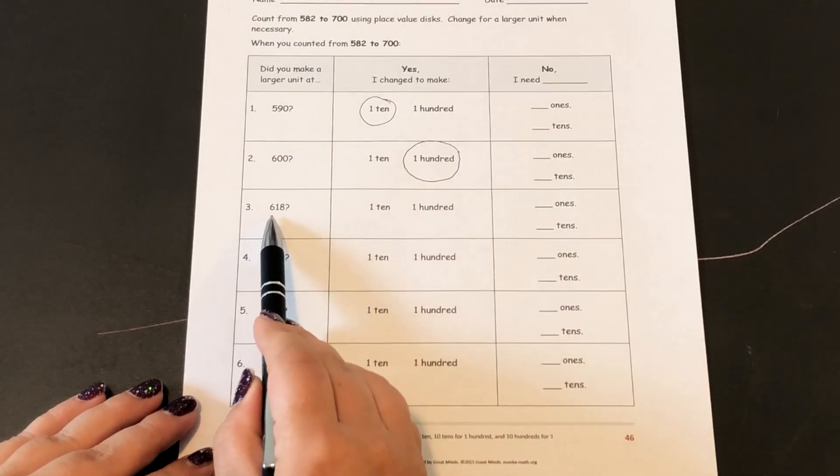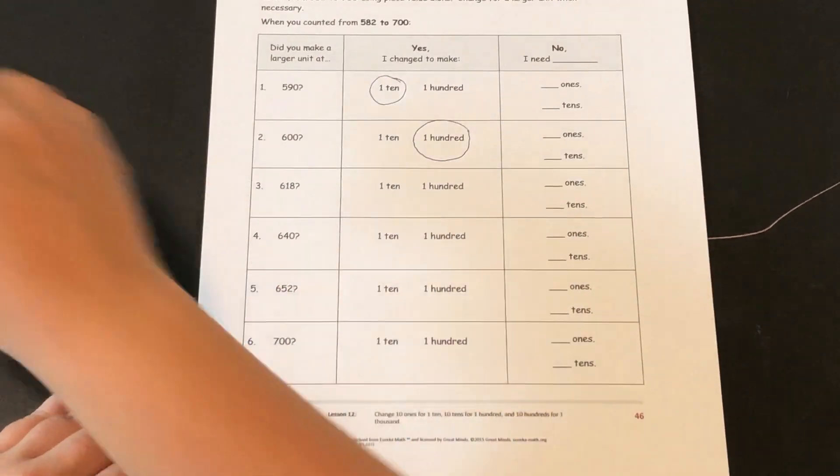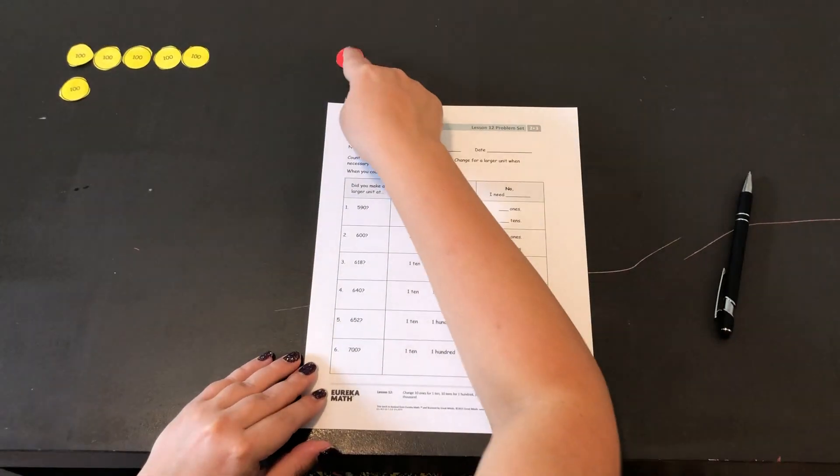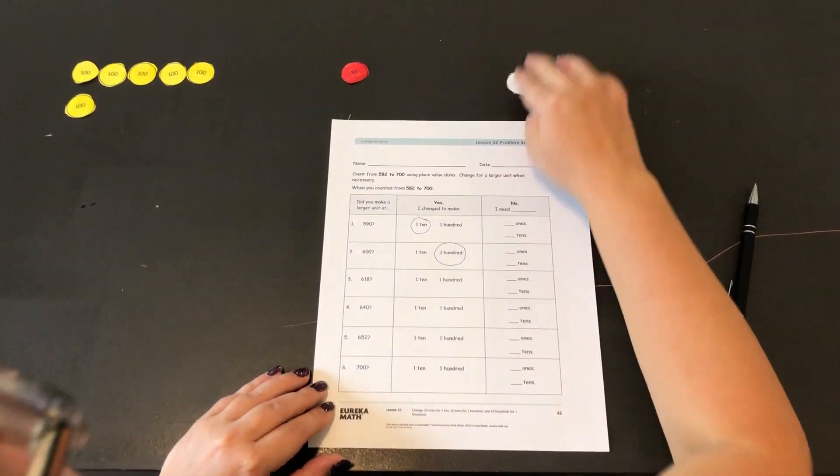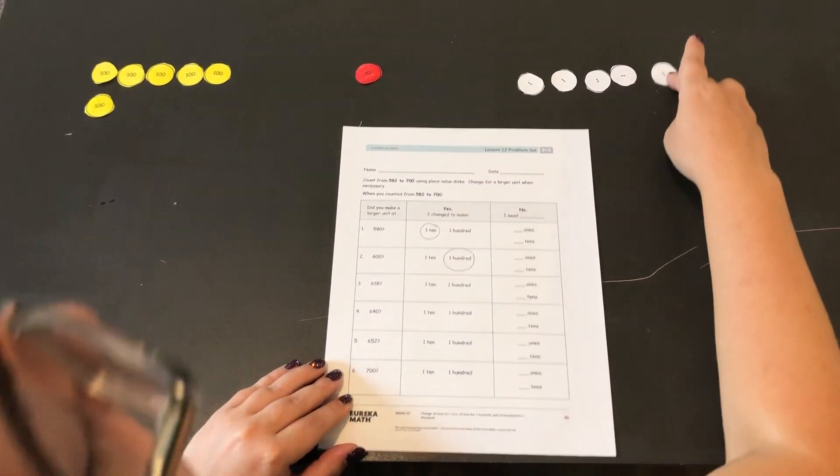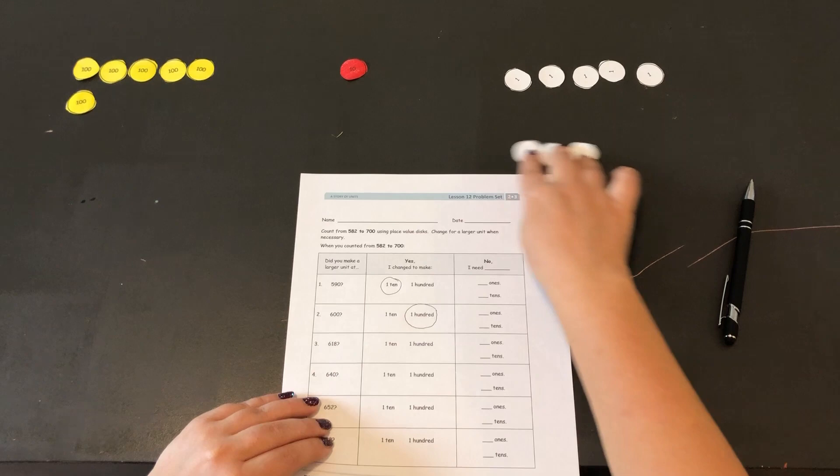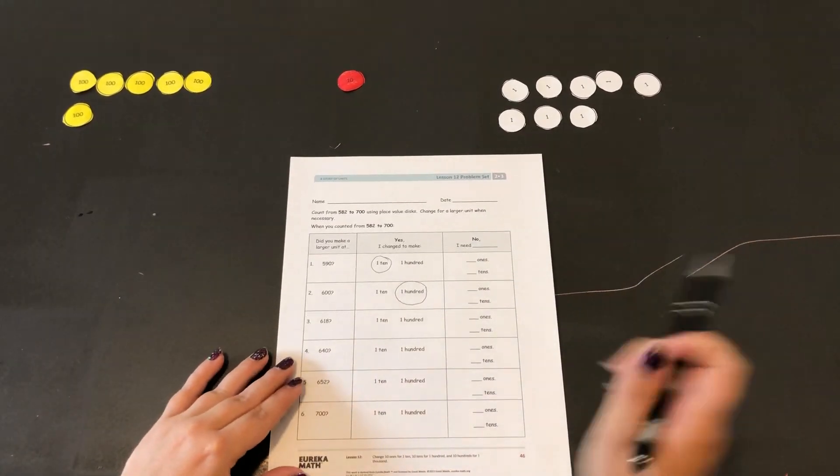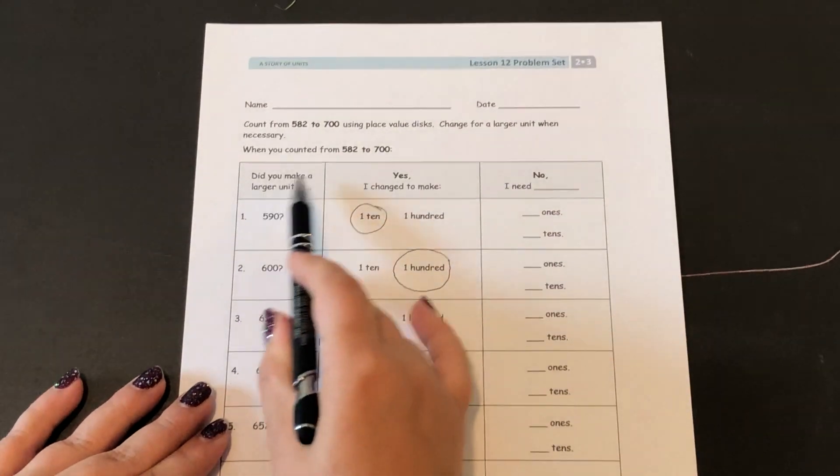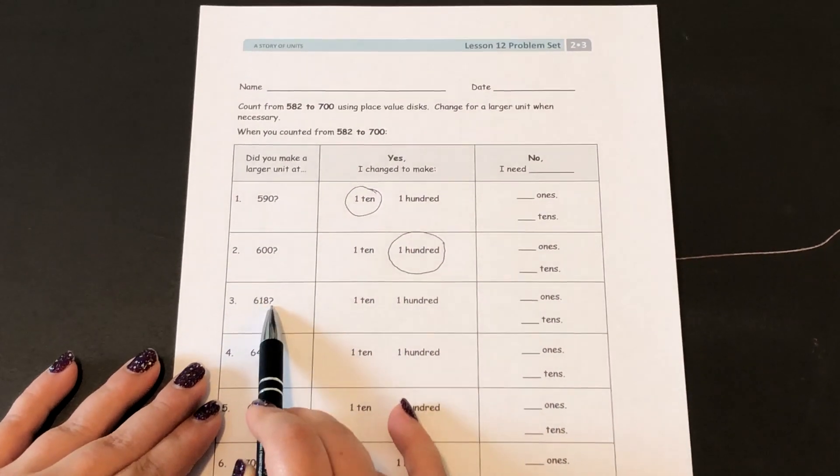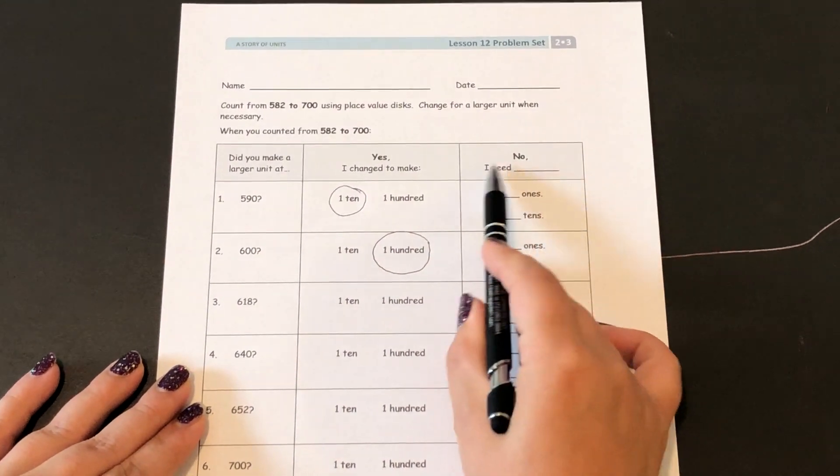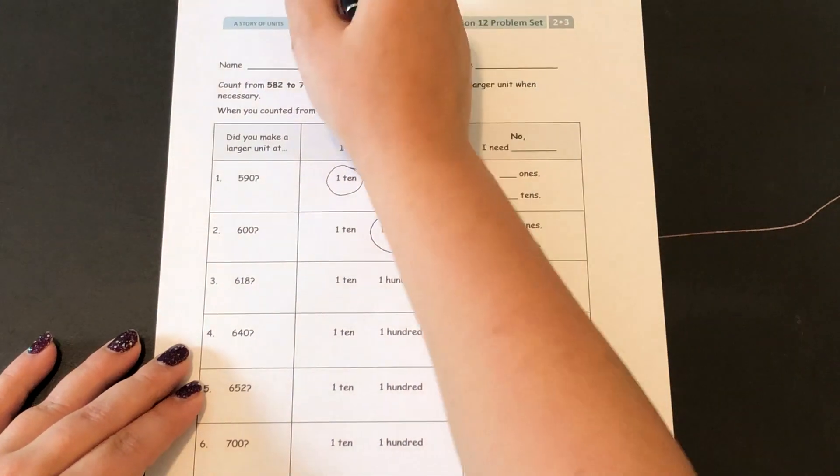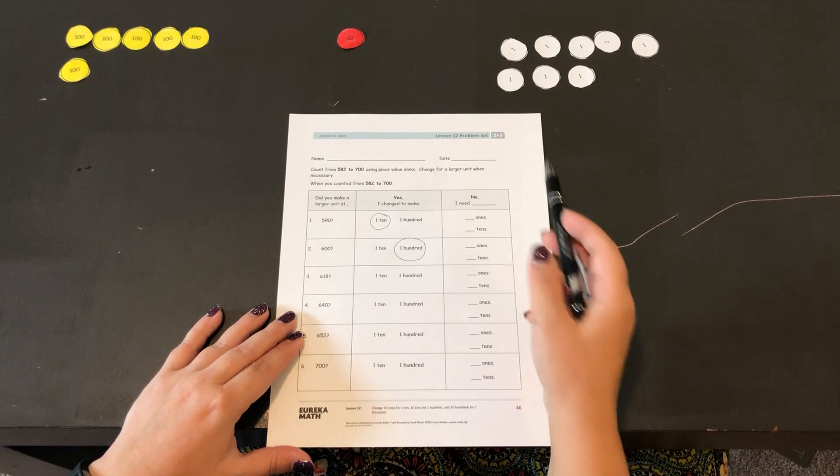Now it wants me to go to 618. So if I'm at 600, now I'm at 610, now I'm at 615, 616, 617, 618. And did you make a larger unit at 618? No, we did not make a larger unit. All I did was add a ten and eight ones.